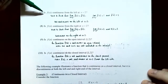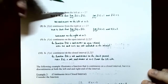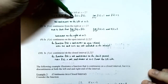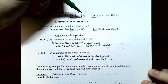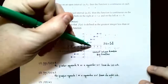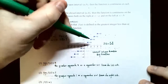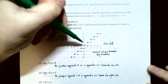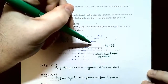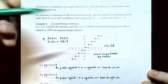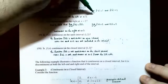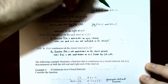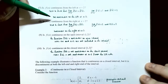Number 7: Is the function continuous from the left at x equals 2? We need the limit as x approaches 2 from the left to equal f(2). Approaching x equals 2 from the left, the y values approach the hole in the graph at y equals 1. But the function's value at x equals 2 is 2. Since 1 ≠ 2, the function is not continuous on the left at x equals 2.